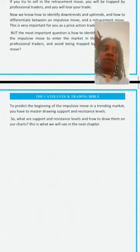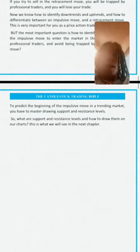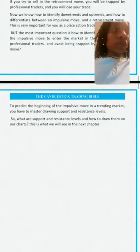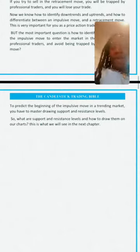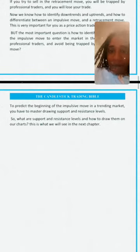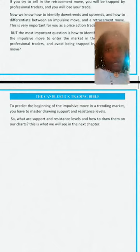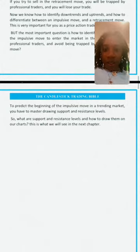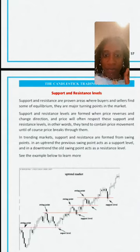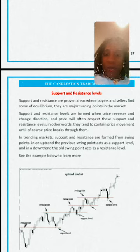Support and resistance are areas where buyers and sellers find equilibrium — the price keeps touching there and it's a major turning point. These levels are formed when prices reverse and change direction. If you look at the chart, most of the red lines going across are at a point where the price was going up, went down, and retraced. They tend to contain price movement until price breaks through.